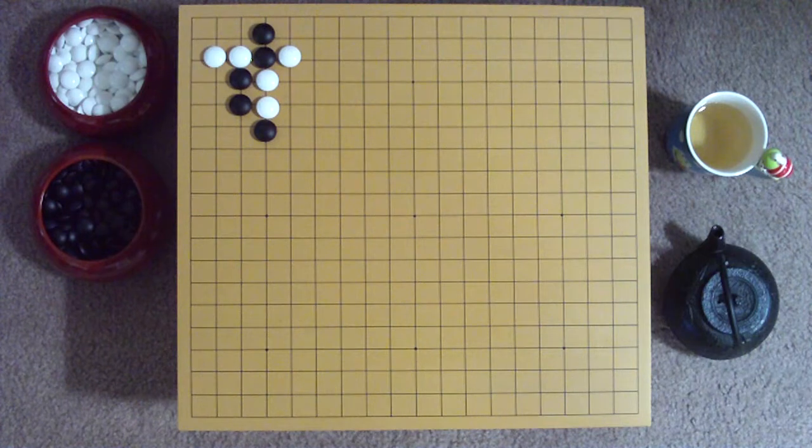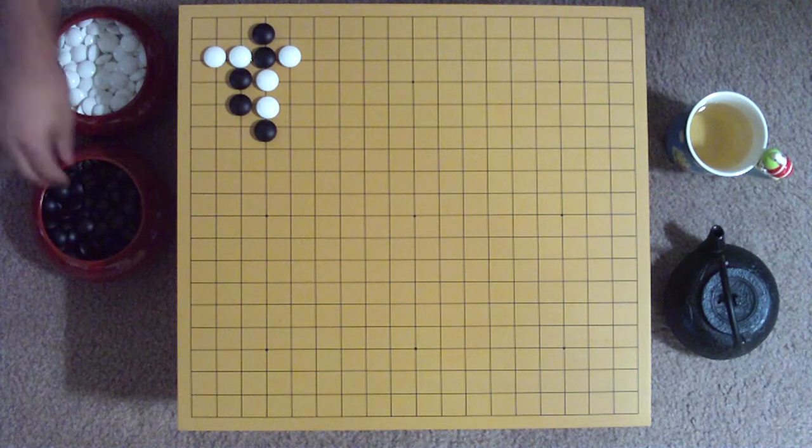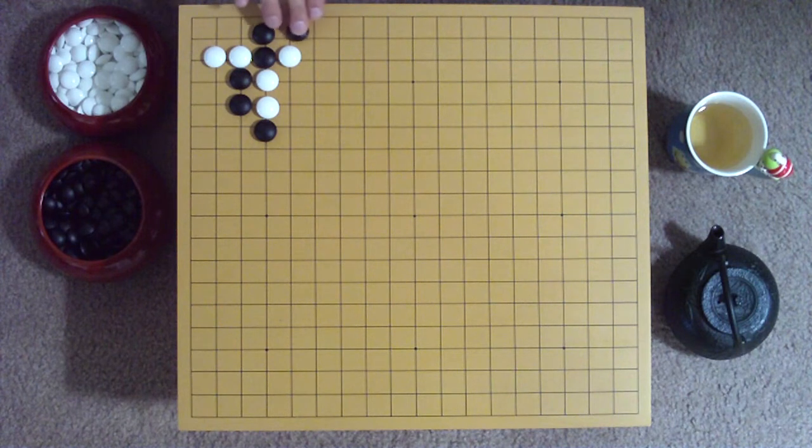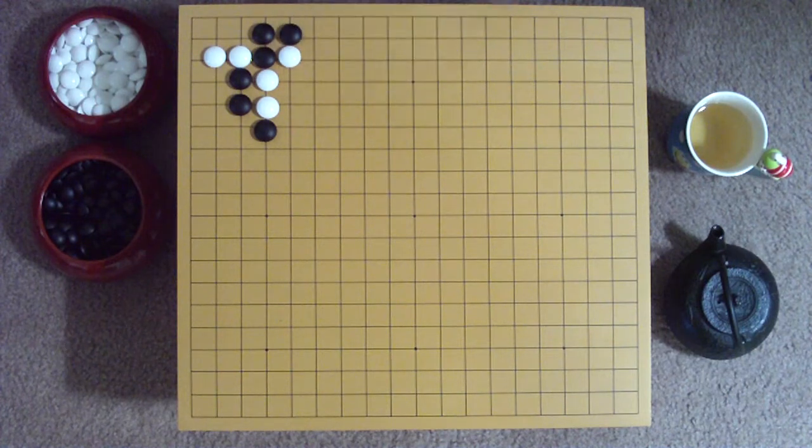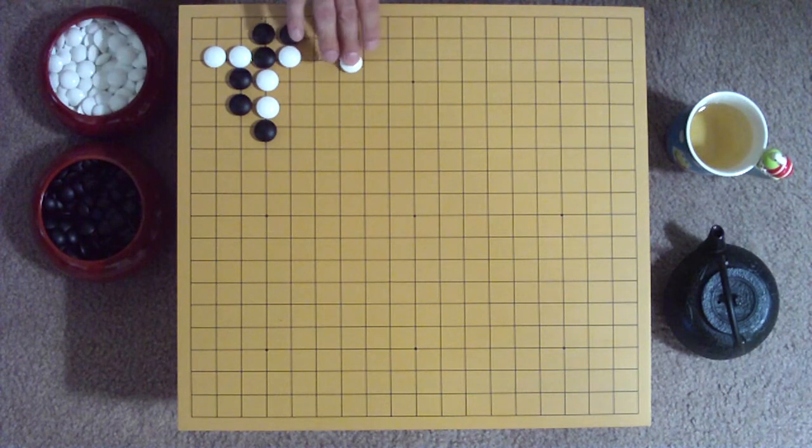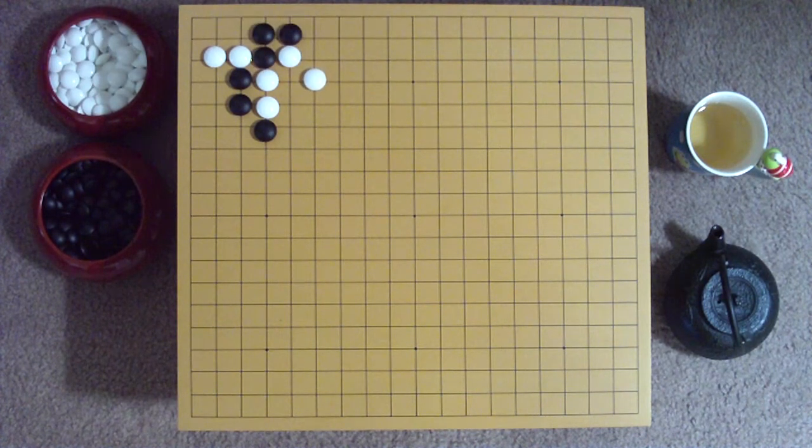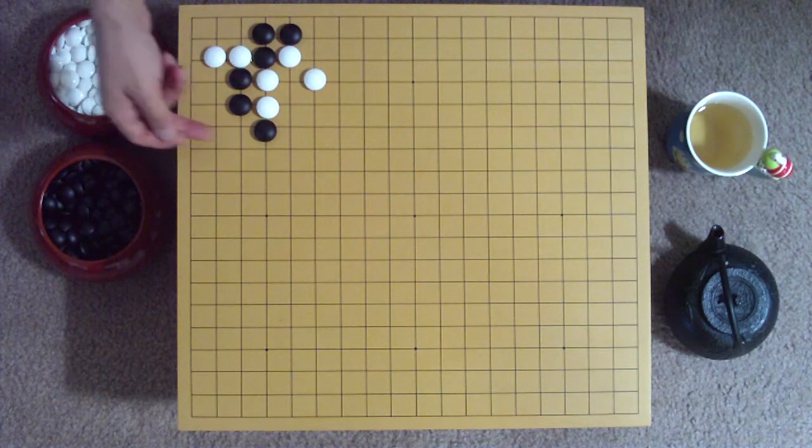An interesting move here for Black is to create an empty triangle on the second line. This hints at capture for all of White's stones. White prevents Black from cutting by building a trap with a hanging connection on the fourth line. Notice that Black still has a weak point on the right side that should be addressed.